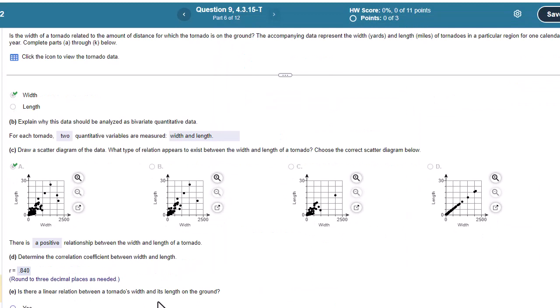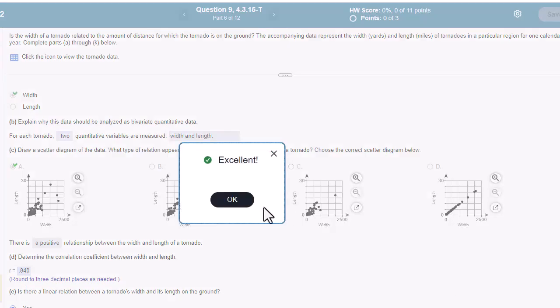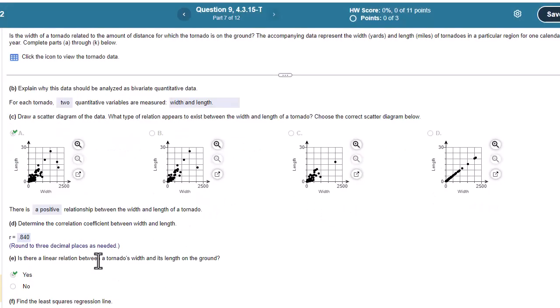Is there a linear relationship between tornado's width and its length on the ground? Looks fairly linear, although it does spread out here a little bit. But we can say linear. There aren't any obvious curves.